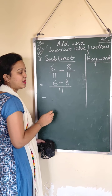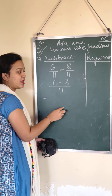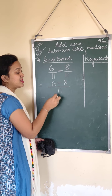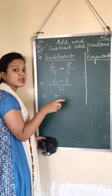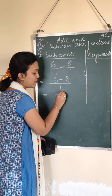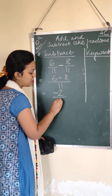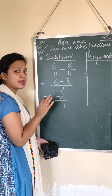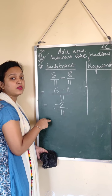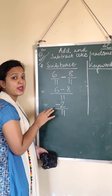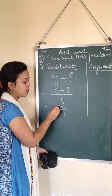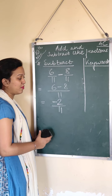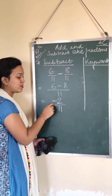Now, 6 minus 8. Since 6 is smaller than 8, we will put a minus sign before. What is 8 minus 6? 8 minus 6 is 2. But since I am asking you 6 minus 8, since 6 is smaller than 8, the answer is going to be minus 2 by 11. Such kind of questions you may not get in your textbook — this is a little higher than whatever you have in your syllabus, but just in order to make you understand, I am using such a question where you get minus 2 as the answer.